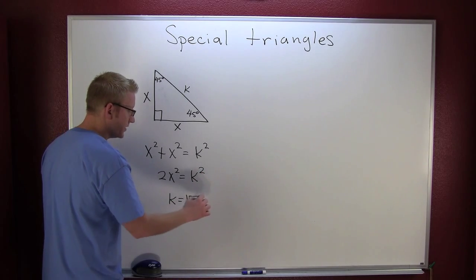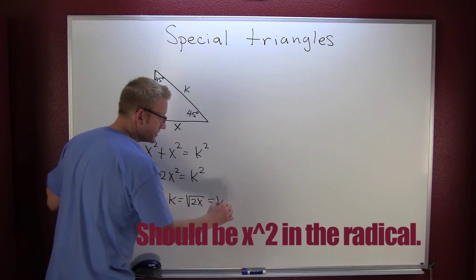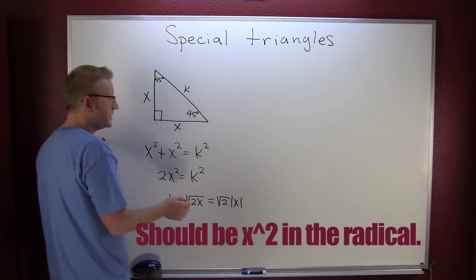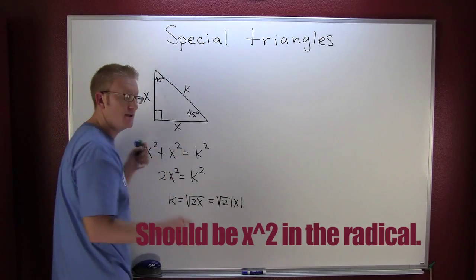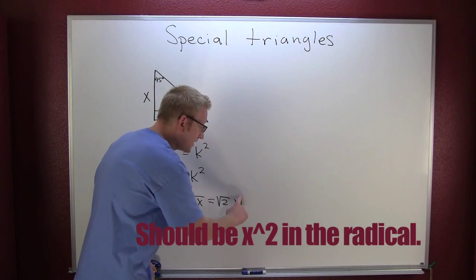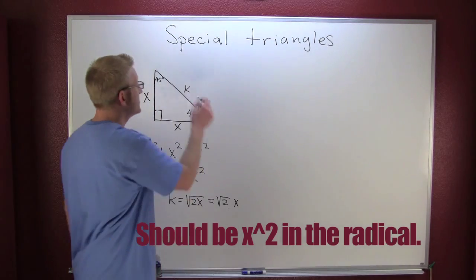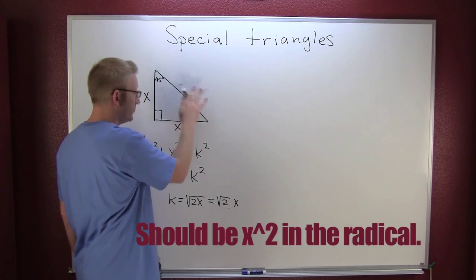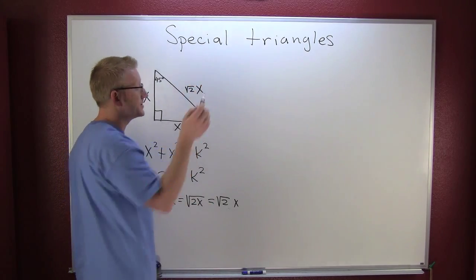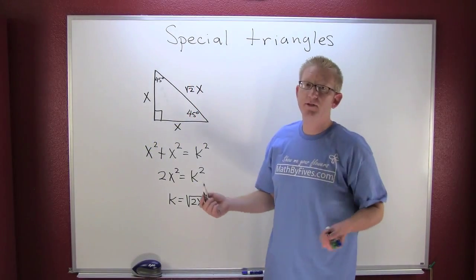And k gonna be the square root of 2x squared. That just so happens to be the square root of 2 times the absolute value of x. But once again we're talking about distances here and distances are positive, so I'm going to go ahead and remove my absolute value bars because they are not necessary. So then k here is really the square root of 2 times x. That's your 45-45-90 triangle.